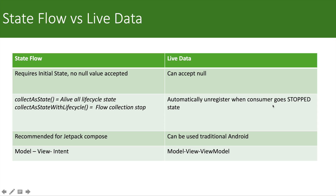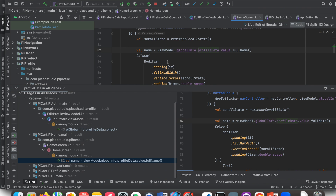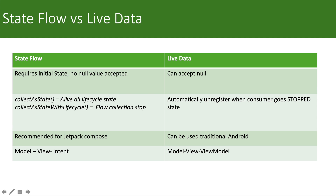Automatically unregistered when the consumer goes to stop state. If you have a stop state in an activity or fragment, you can observe LiveData and collect changes safely. Whereas if you collect as StateFlow, LiveData is lifecycle-aware but StateFlow is lifecycle-unaware by default. If the UI goes to the background and there is a change in the StateFlow, it may still try to update the UI. That's why you use collectAsState when collecting StateFlow in Jetpack Compose.